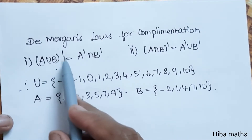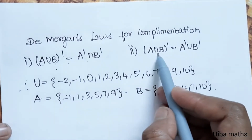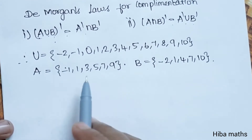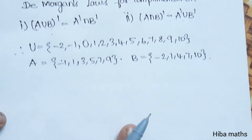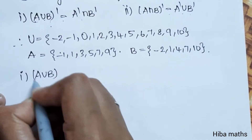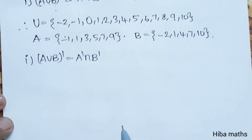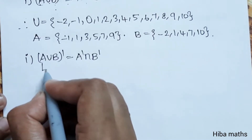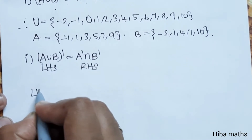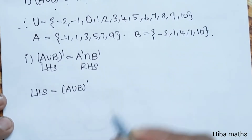Law 1: A union B whole dash is equal to A dash intersection B dash. Law 2: A intersection B whole dash is equal to A dash union B dash. For Law 1, we solve LHS and RHS separately.